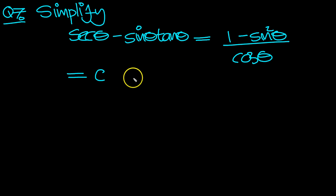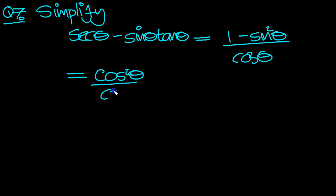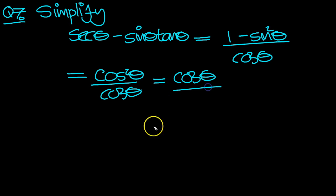One minus sine squared is cosine squared over cosine theta, so one of the cosines will cancel top and bottom to leave cosine theta.